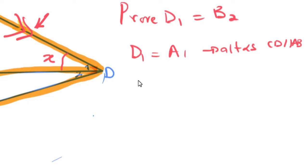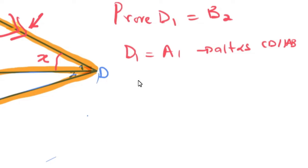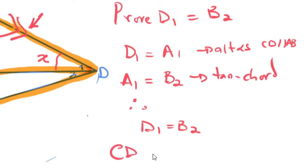...that D₁ is equals to A₁, alternate angles, because CD is parallel to AB. The second statement I also know is A₁ is equals to B₂, which is a tan chord. So therefore we can now say that D₁ is equals to B₂. From our original statement, CD would be a tangent.